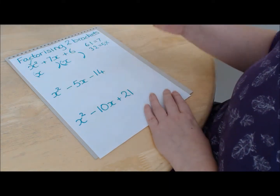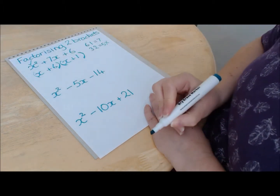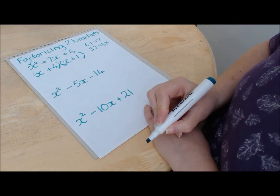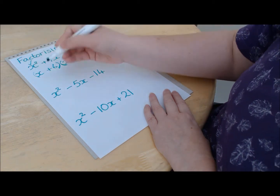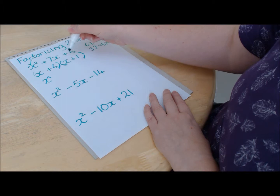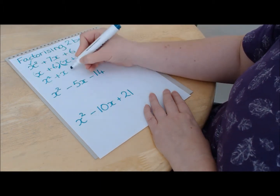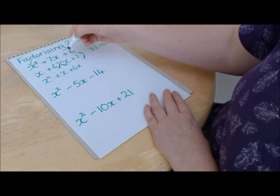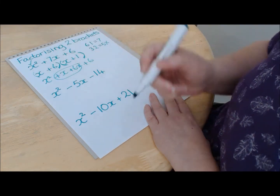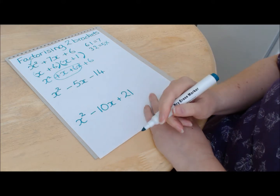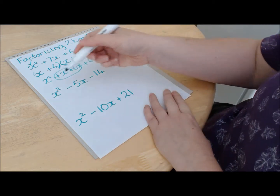So 6 and 1 are the numbers that go in our brackets, because 6 times 1 gives us the 6 on the end and 6 plus 1 gives us the plus 7 in the middle. At this simple stage it doesn't matter which goes into which bracket. To confirm: x times x gives x squared, x times 1 gives x, 6 times x gives 6x, and 6 times 1 gives 6 — those two middle terms combine to give 7x. You can always check by reversing the process.